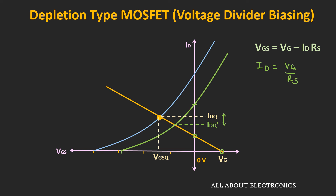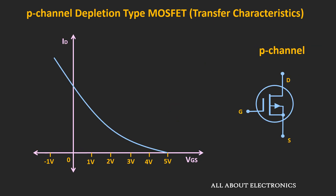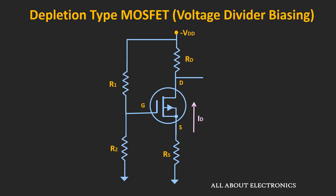So far we have discussed only the N-channel MOSFET, but it is also possible to bias the P-channel MOSFET. The transfer characteristic of the P-channel MOSFET is the mirror image of the N-channel MOSFET; the value of VGS is positive and it also works for negative VGS in the enhancement region. In terms of biasing, the only change is in the polarity of the supply voltage — the supply is negative and the direction of drain current is opposite — otherwise the analysis remains the same.